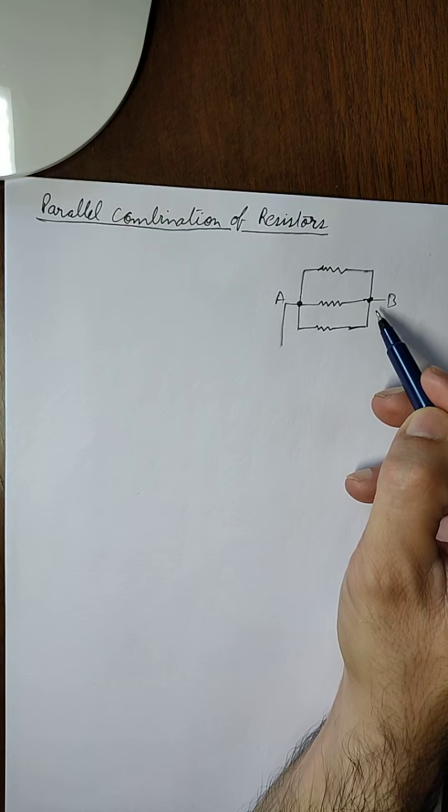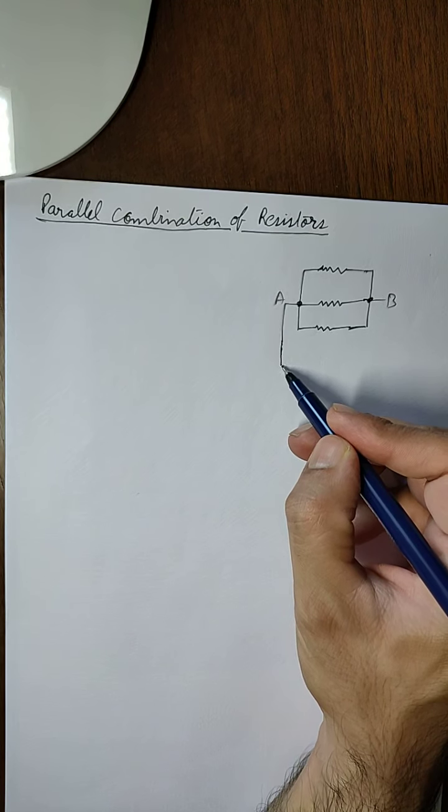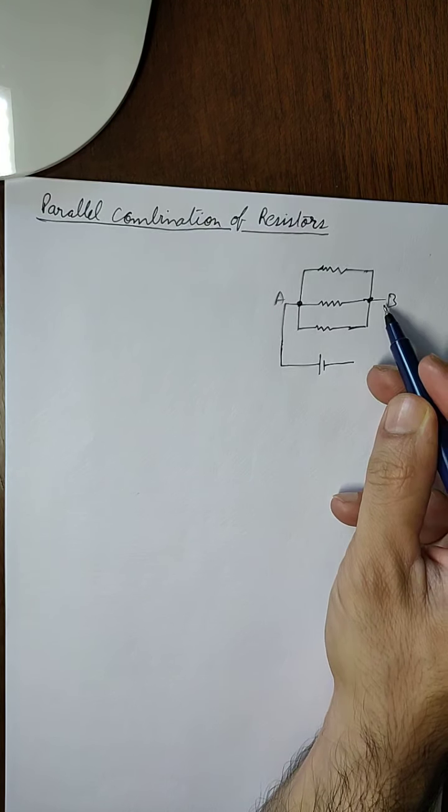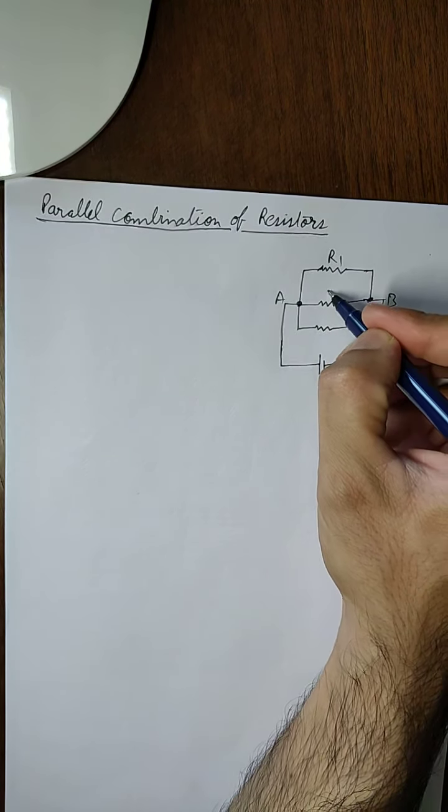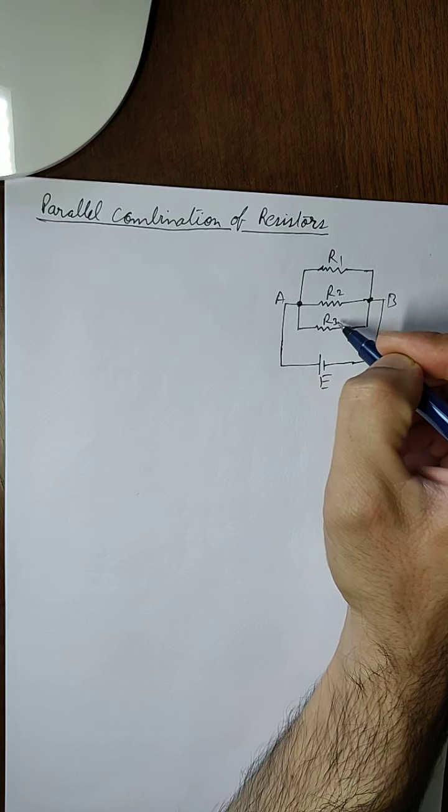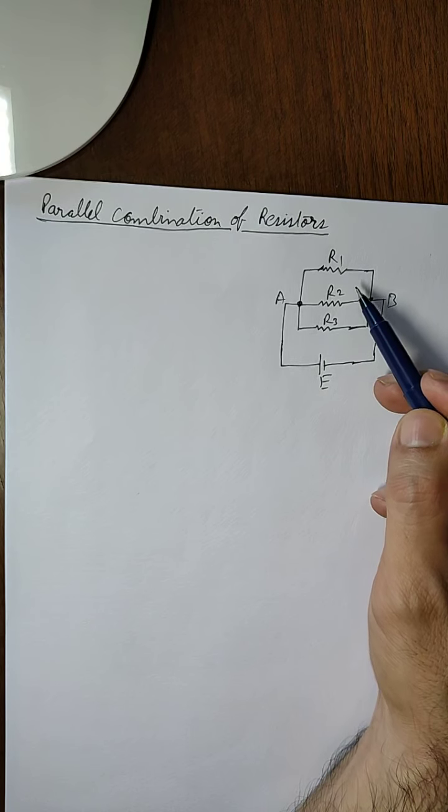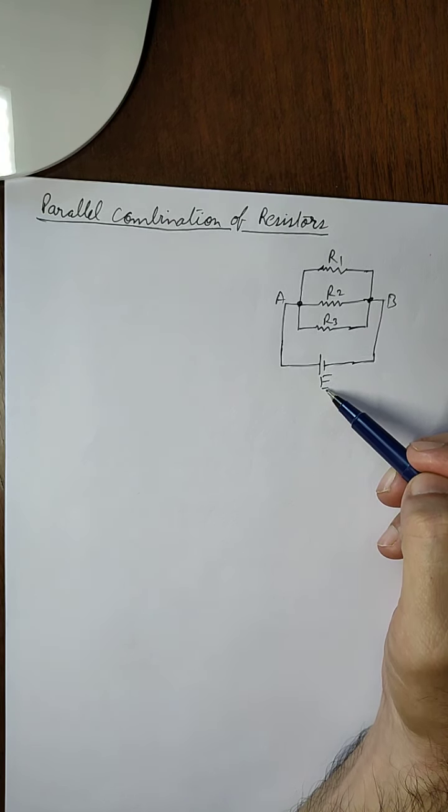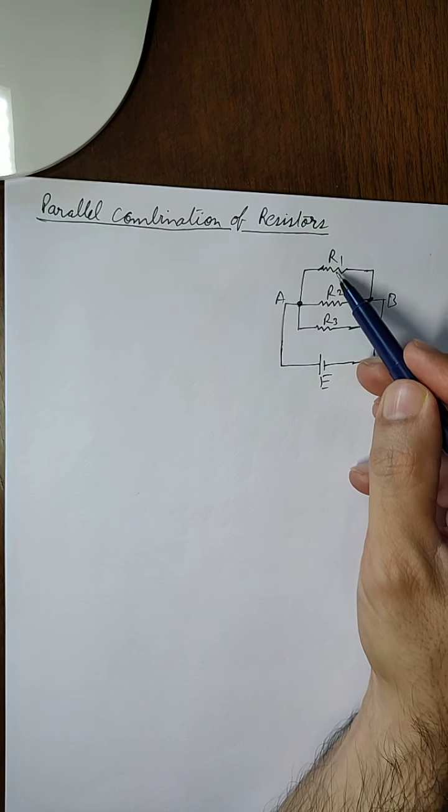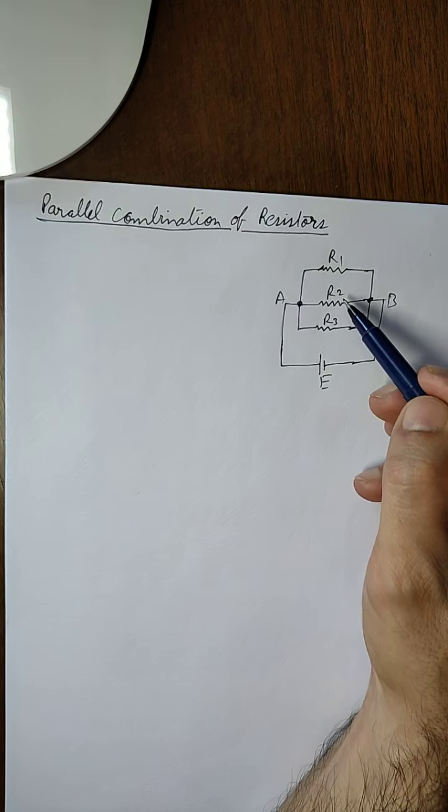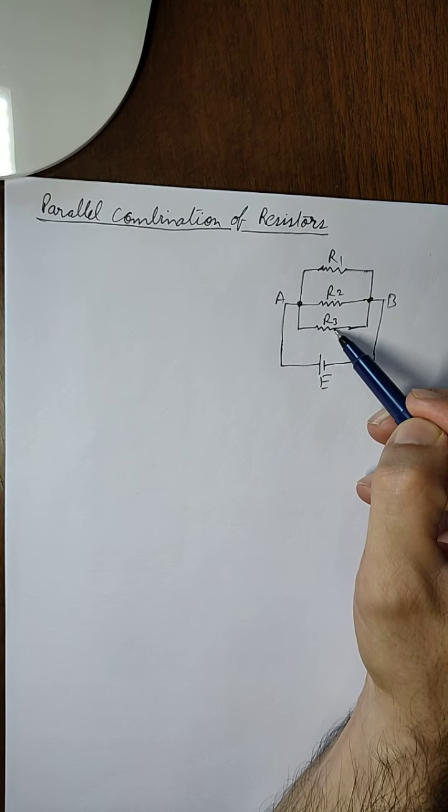Such a combination is called a parallel combination. If this combination is connected to a battery of EMF E, we can see that the potential drop across each branch or across each resistor will be equal to the potential of the battery, which is E, because all of them are connected in parallel. So there will be E potential drop on this resistor, E on this, and E on this.